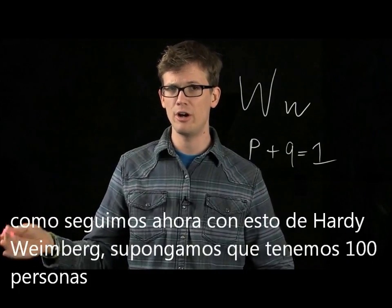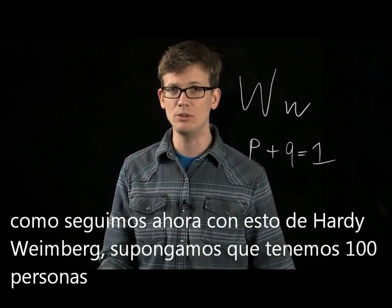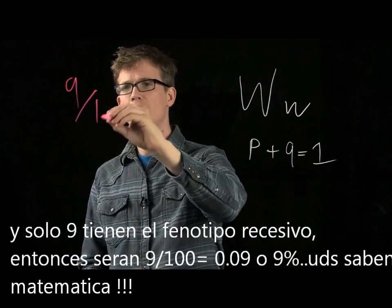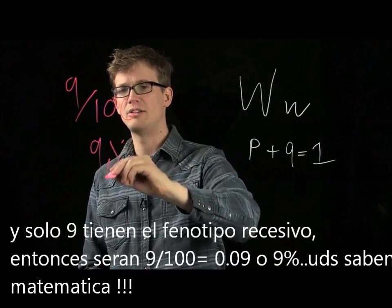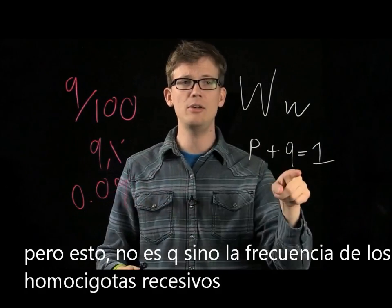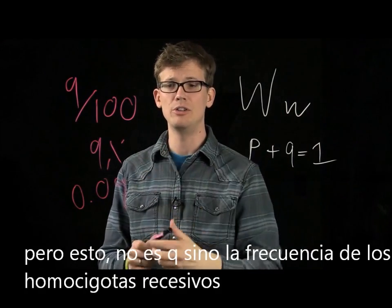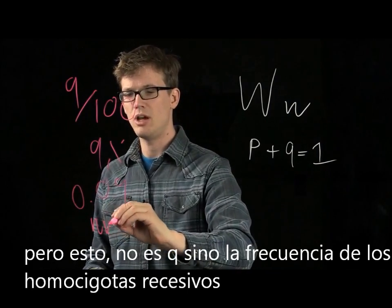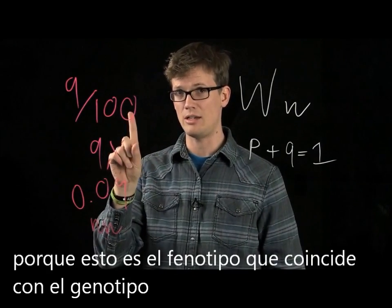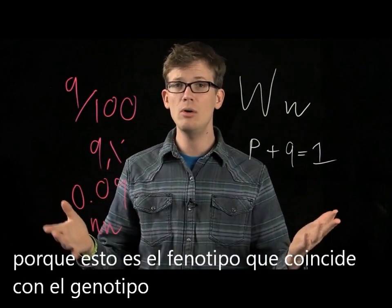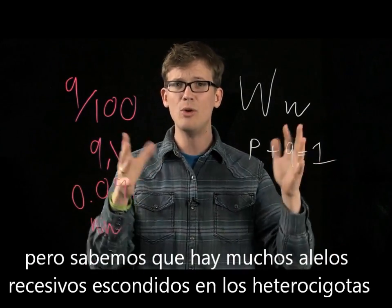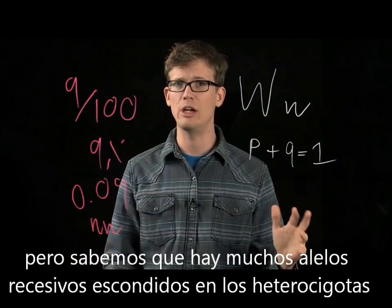So if the frequency of P is 75%, the only other thing it could be is Q, so that's going to be 25%, which adds up to 1. So imagine we go to this hypothetical, no fun, Hardy-Weinberg Island, and there are 100 people, and we poke every single one of them in the ear, and 9 of them have dry earwax. So that's 9 over 100, or 9%, or 0.09. But this is not Q — it's not the frequency of the little w; it's the frequency of homozygous ww. So this is the expressed phenotype, not the genotype. We know the frequency of ww, but there's going to be a bunch of other W alleles hanging around in heterozygous pairs.